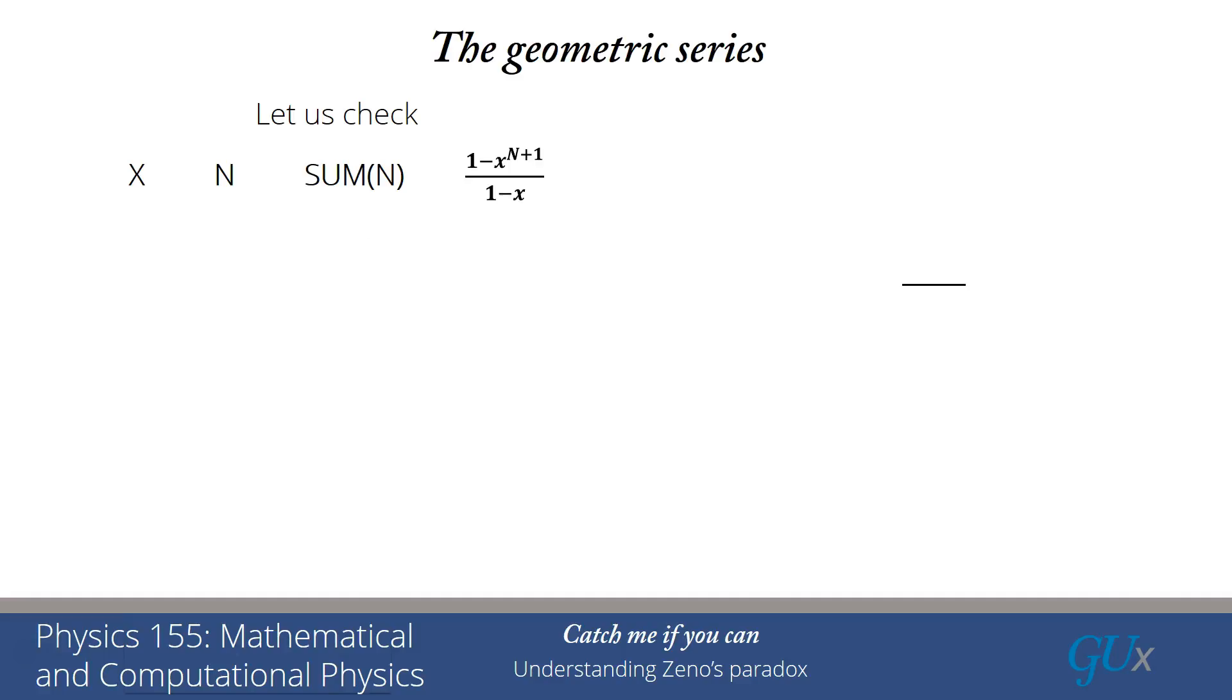All right, but let's do a sanity check. Let's go back to our x equals 0.1 and let's look at a couple of numbers of terms. So if n is equal to 0, then x to the n plus 1 is equal just to x and I get 1 minus 0.1, which is 0.9, divided by 1 minus 0.1, which is 0.9, and I get 1. And indeed the sum is just equal to 1 because that was the first term of the geometric series.